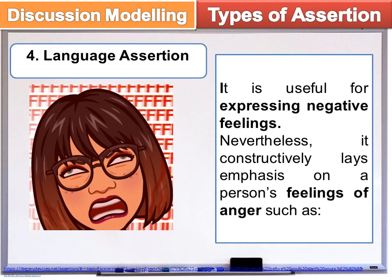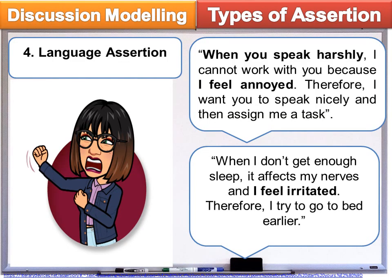The last one: Language Assertion. It is useful for expressing negative feelings; nevertheless, it constructively lays emphasis on a person's feelings of anger. Such as: 'When you speak harshly, I cannot work with you because I feel annoyed. Therefore, I want you to speak nicely and then assign me a task.' Another example: 'When I don't get enough sleep, it affects my nerves and I feel irritated. Therefore, I try to go to bed earlier.'